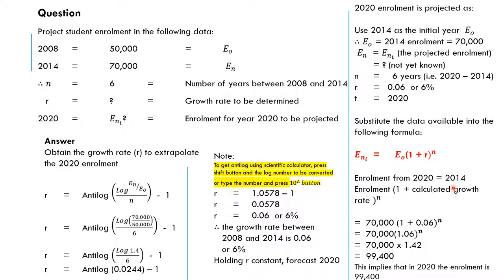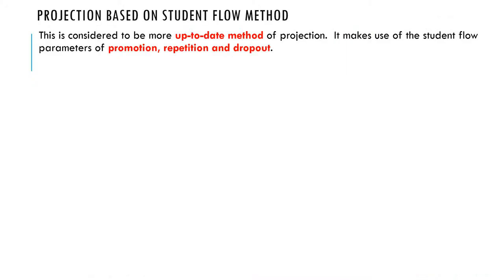So substitute the data available into the following formula. When you substitute, the enrollment from 2020 equals 2014 enrollment into (1 + calculated growth rate). This gives us 70,000, the initial year 2014, into (1 + r), where r is 0.06, raised to the power n, which is 6. So when you work it out, it's 70 times this, which gives you 99,400. This implies that in year 2020, the enrollment is going to be 99,400.